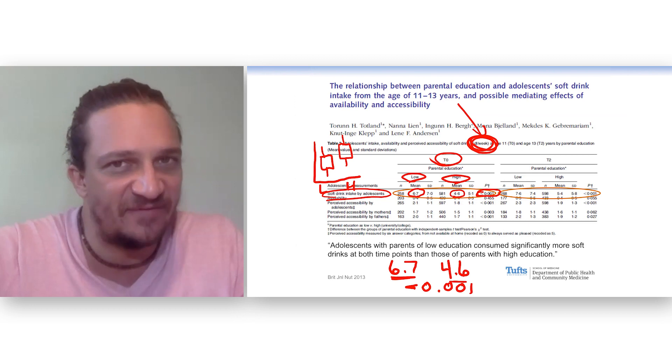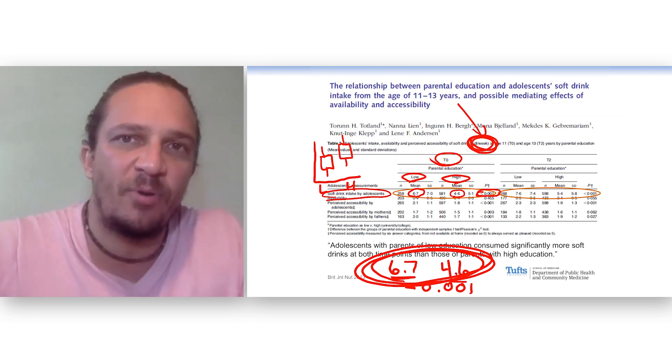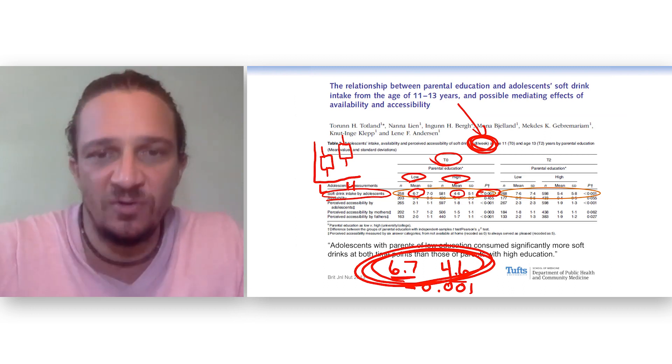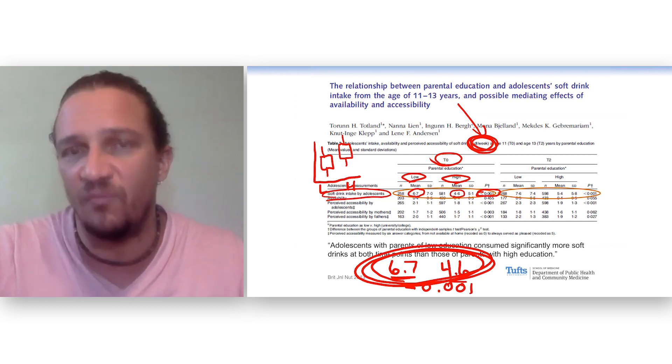Now, we always want to ask that follow-up question: is it clinically relevant? This is deciliters per week. 2.1 more deciliters per week. I'll leave that to you to look up and see what a deciliter is and whether you think that might be clinically relevant.